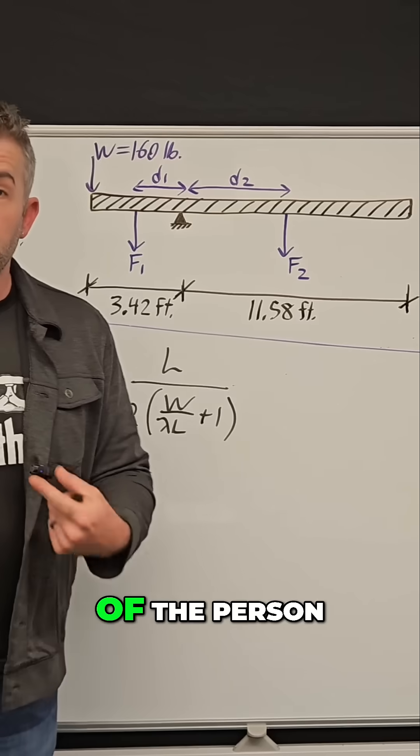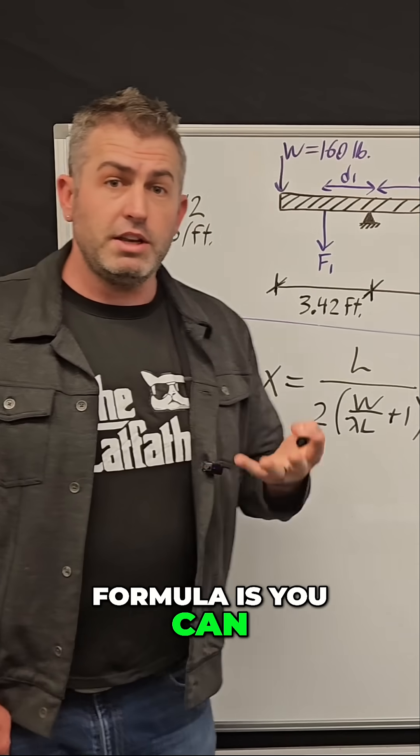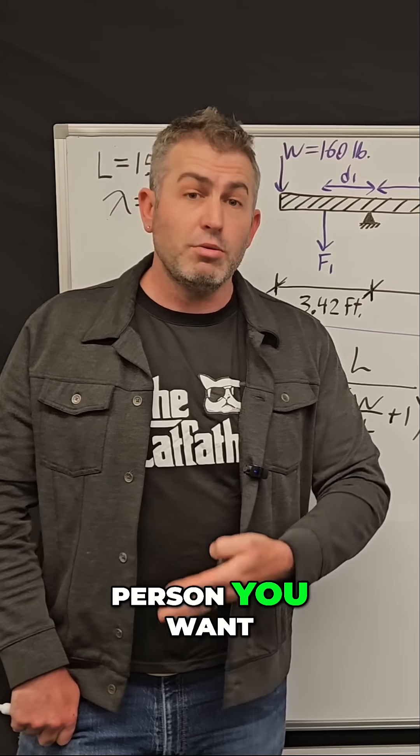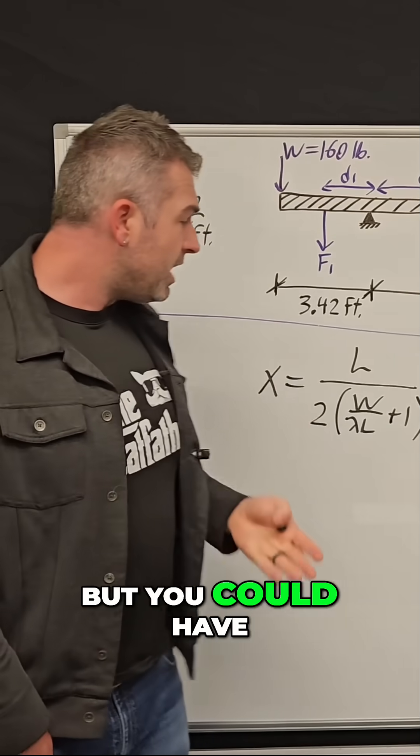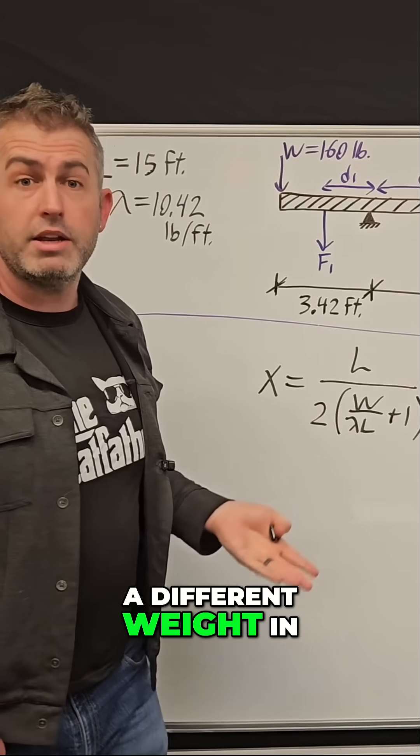W is the weight of the person. So the beauty of this formula is you can use it for any person you want. In my case, W was 160 pounds, but you could have a different person and a different weight in your formula.